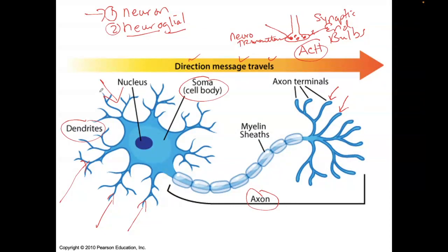The dendrites receive or are sending information into the cell body and the nucleus, and then the cell body sends the information away through an axon. This dilated part of the axon right there is called an axon hillock.